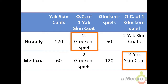The country with the lower relative opportunity cost of production will specialize in the production of that good and then export that good if trade occurs. Nobully should specialize in yak skin coats and Medicoa should specialize in glockenspiels.